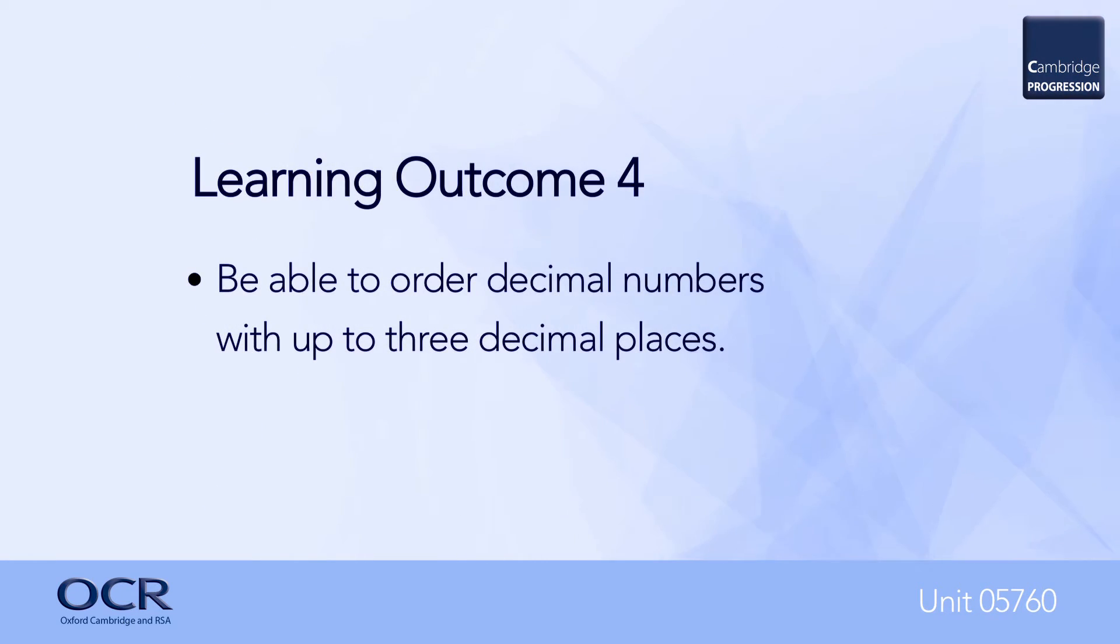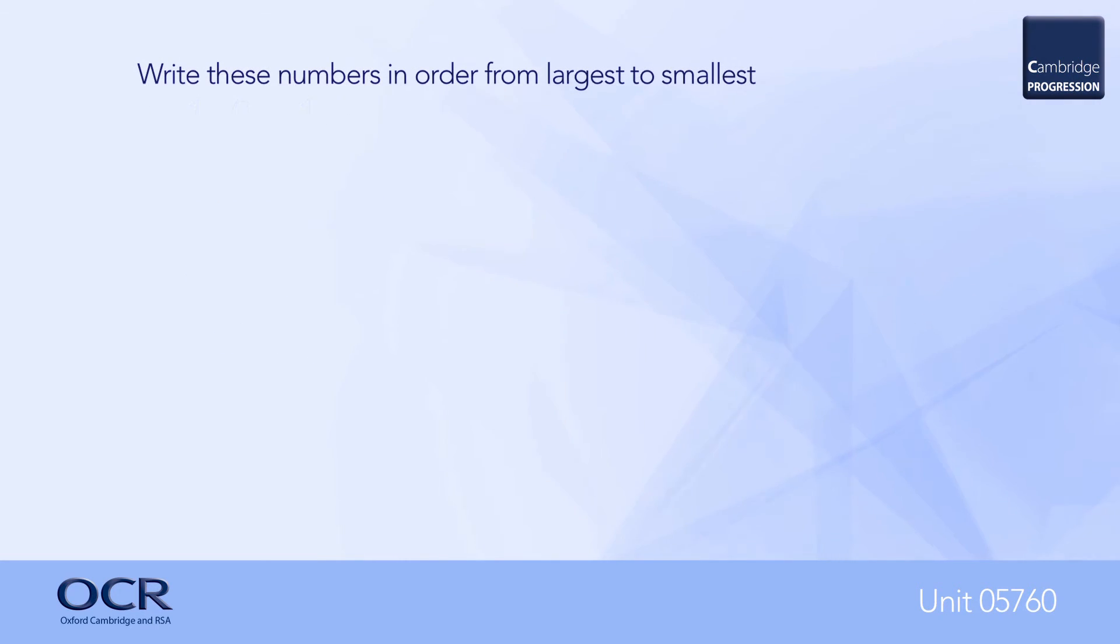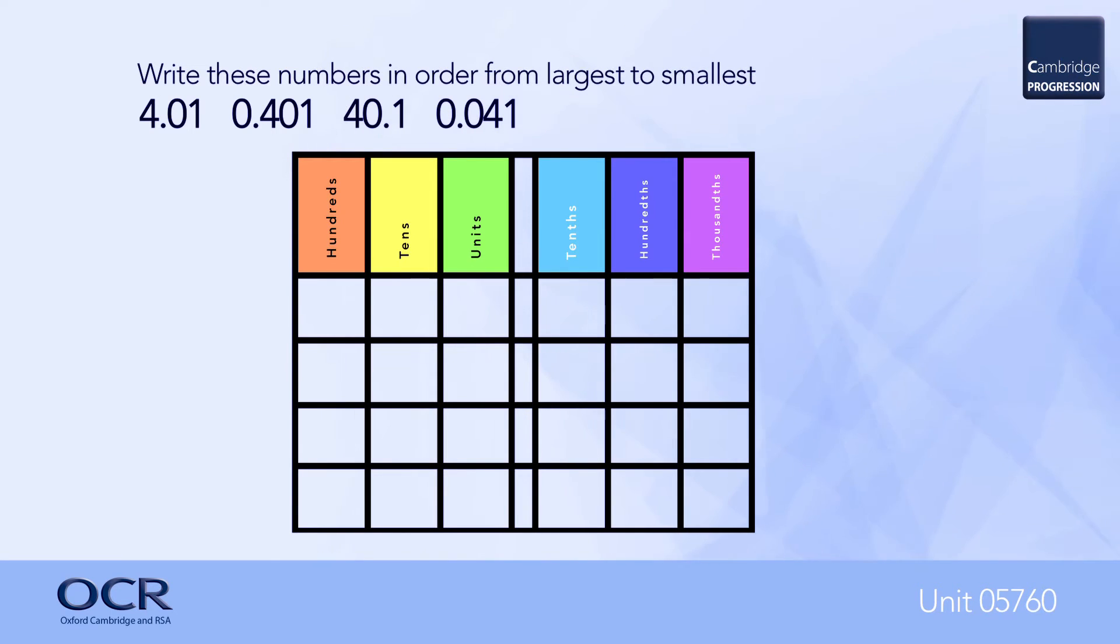For learning outcome number four, learners must be able to order decimal numbers with up to three decimal places. The knowledge for this outcome is covered in unit 05756, and learners can be reminded of the place value table, such as shown here, to help answer this question.